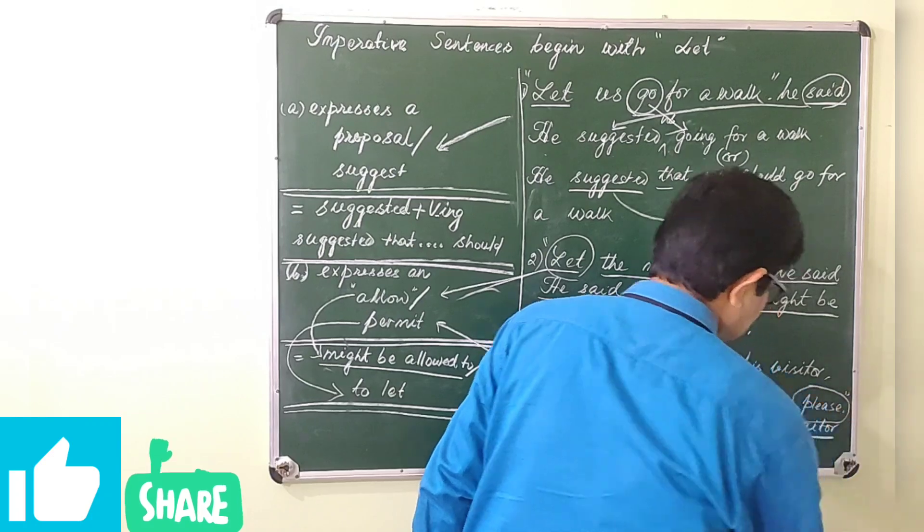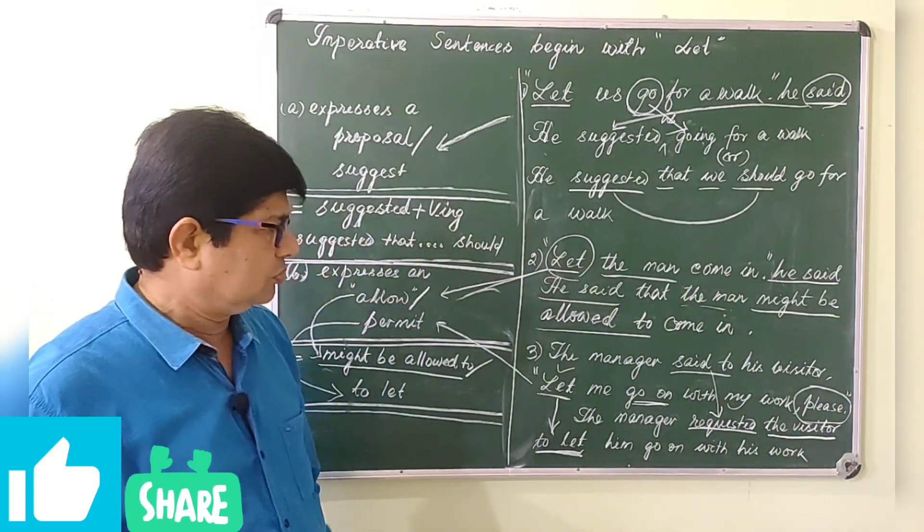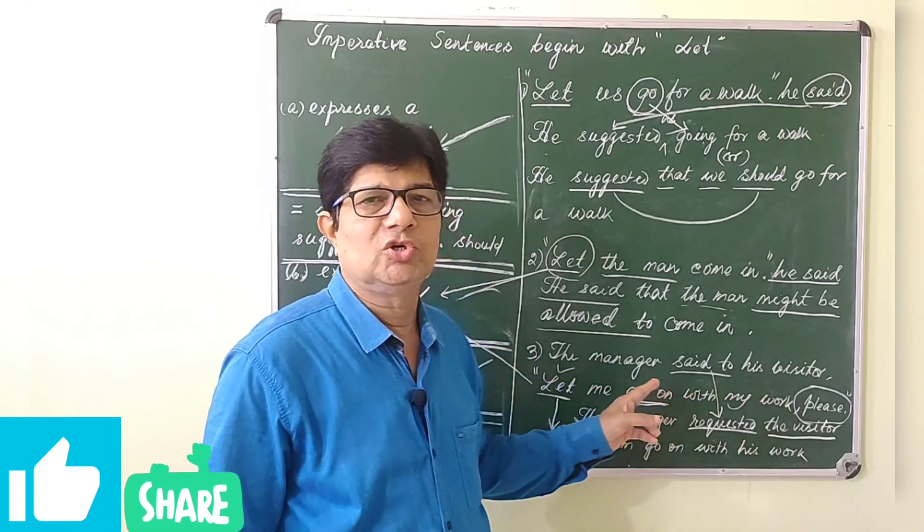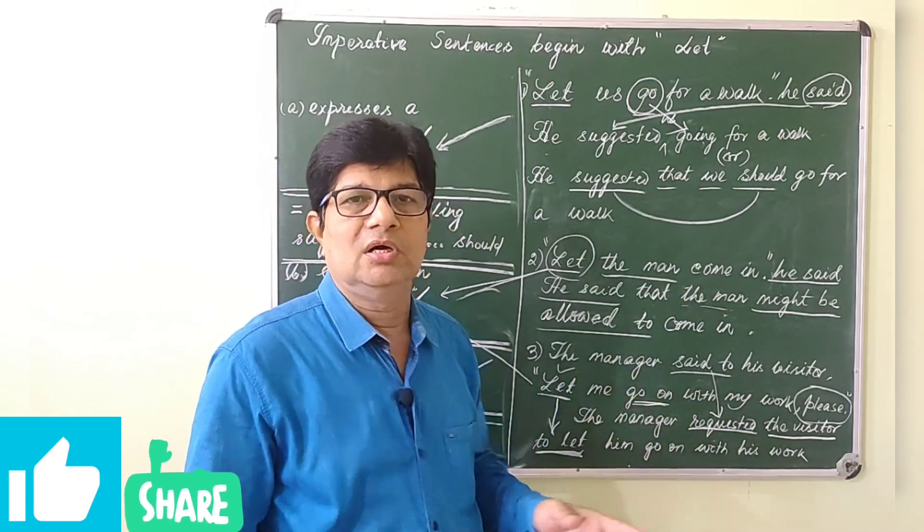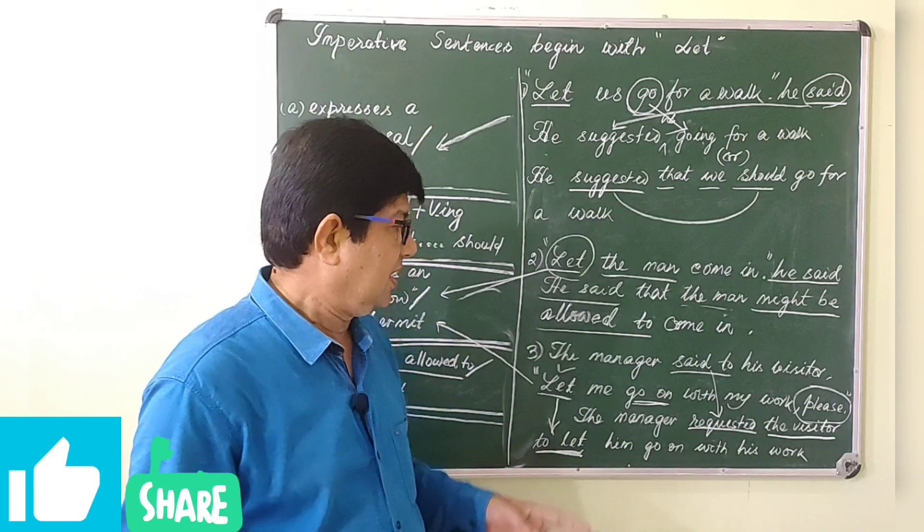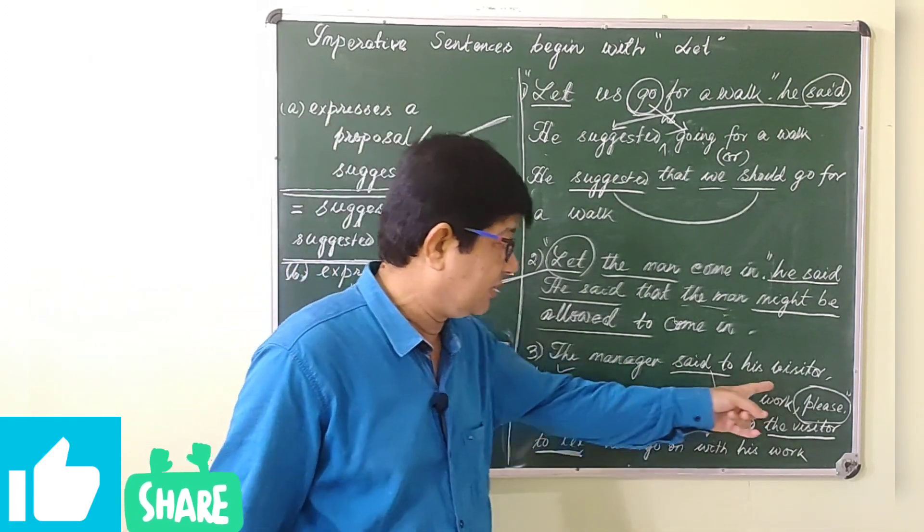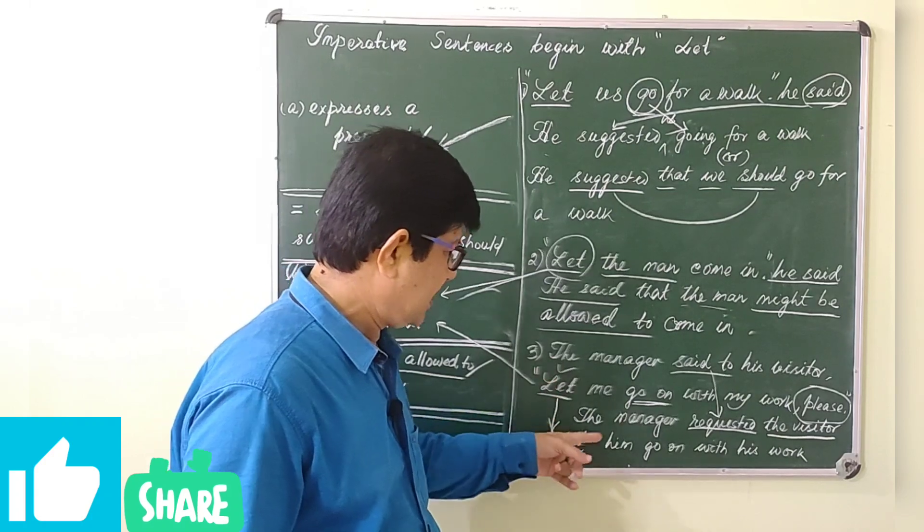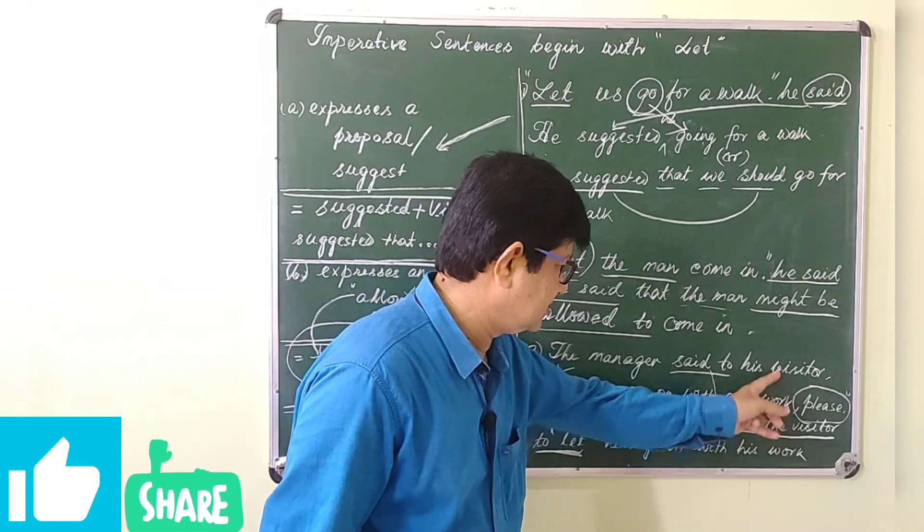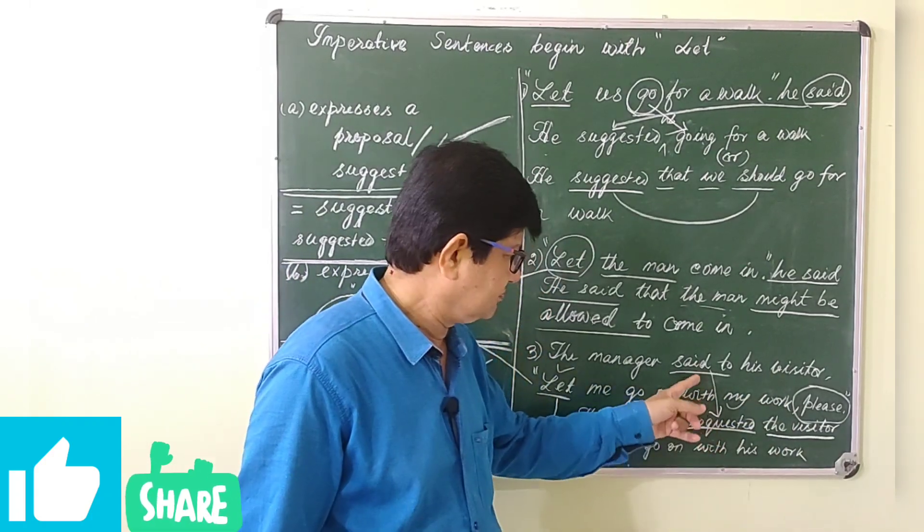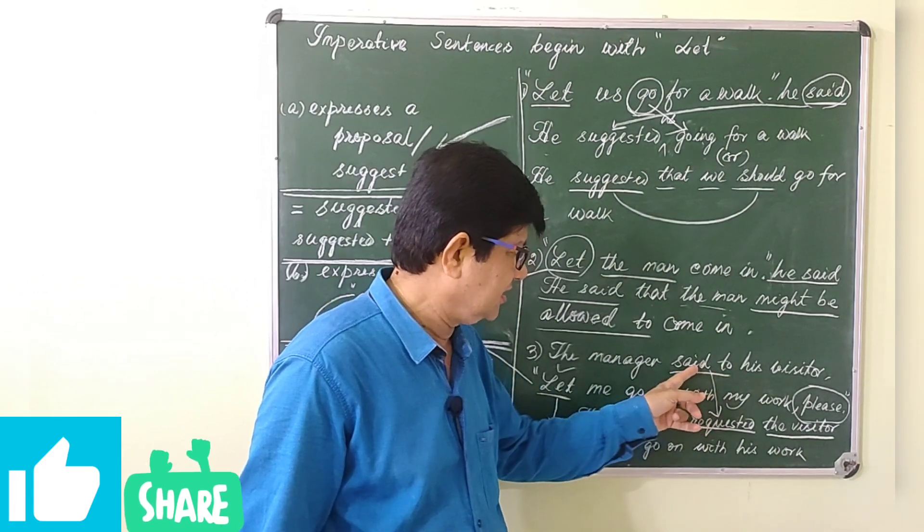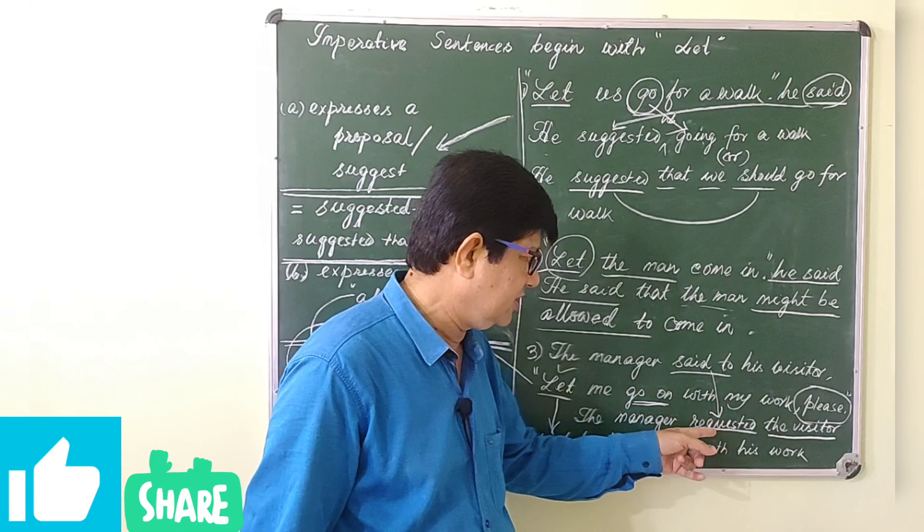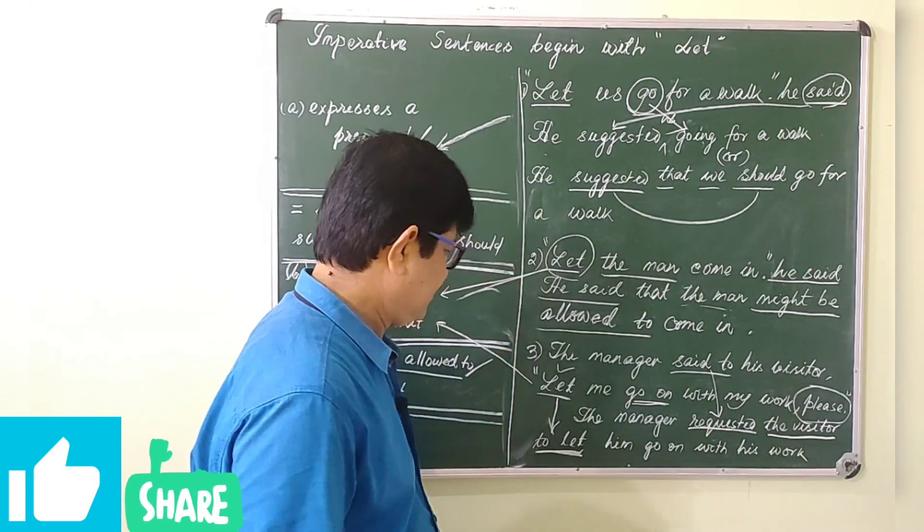From this sentence, we could know that the visitor somehow interrupted the manager in his work. That's why the manager politely requested. The manager requested the visitor. Said to - said is intransitive, but requested is transitive. That's why to is not used here.